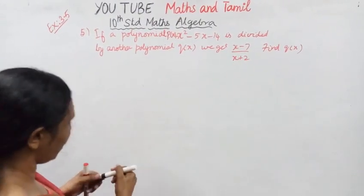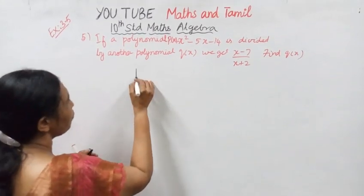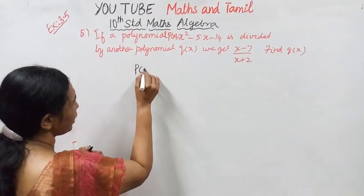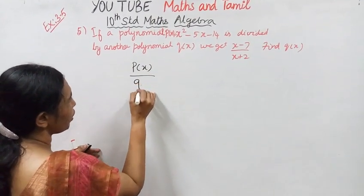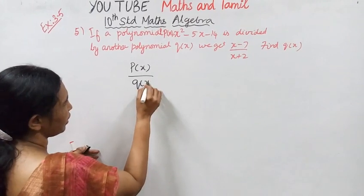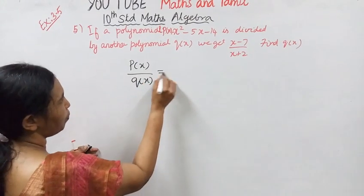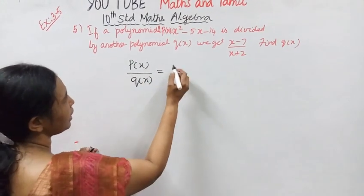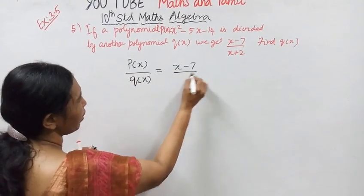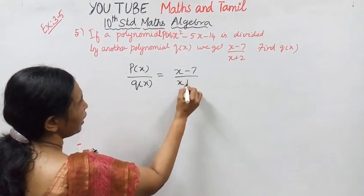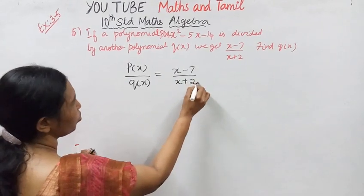How do we get P of X divided by Q of X? Then we get X minus 7 by X plus 2.